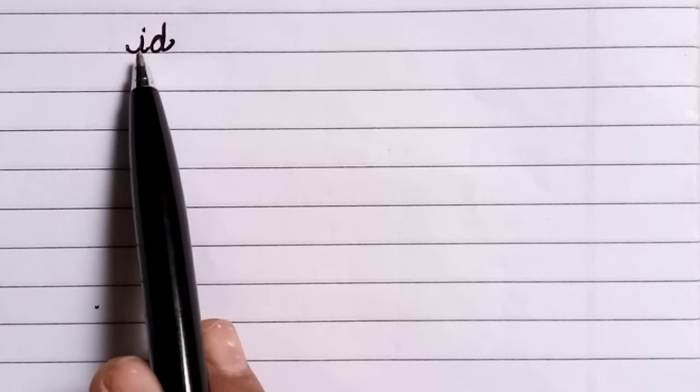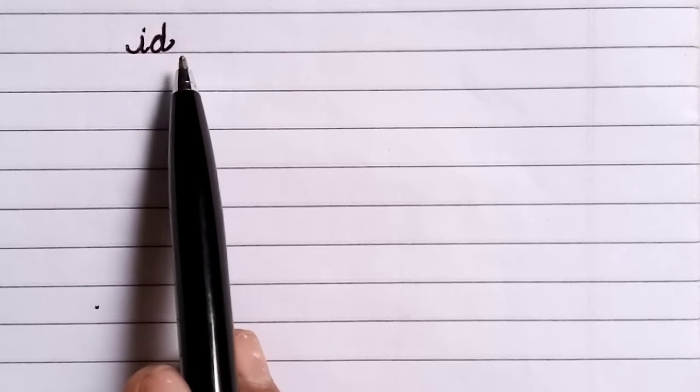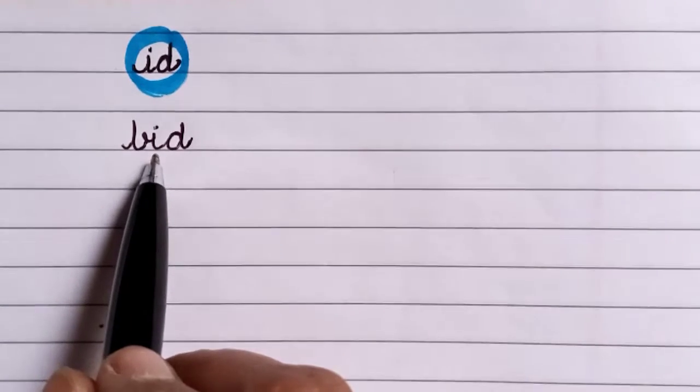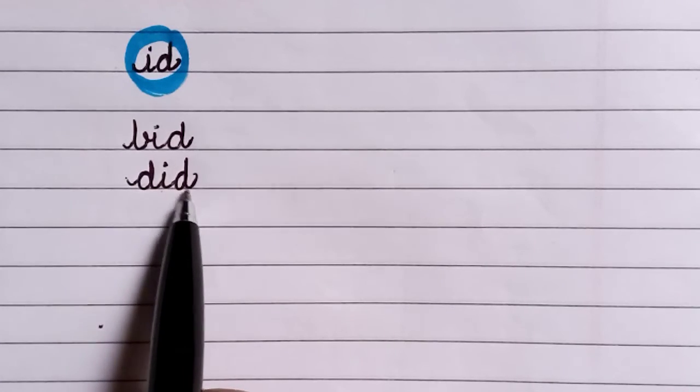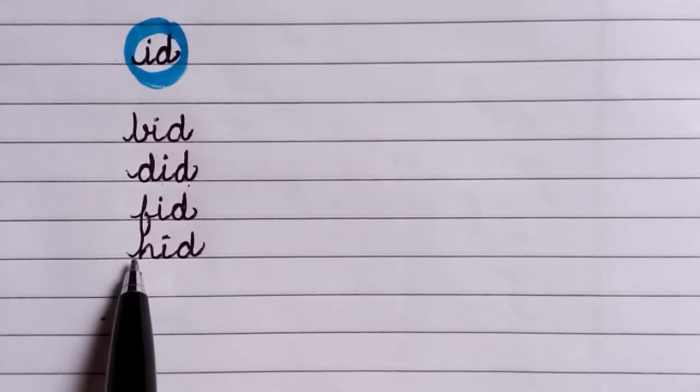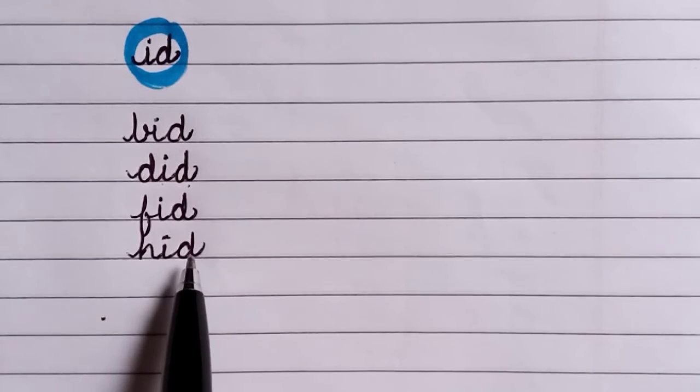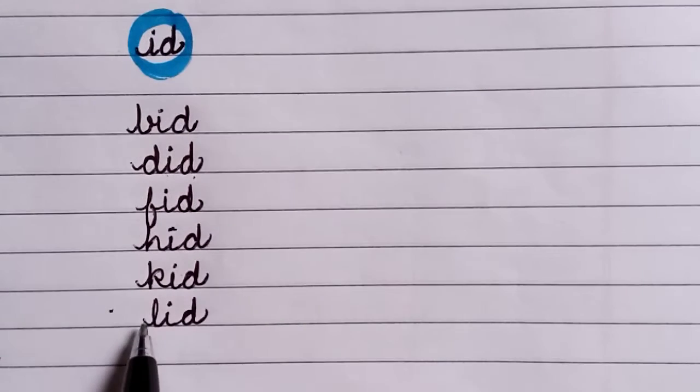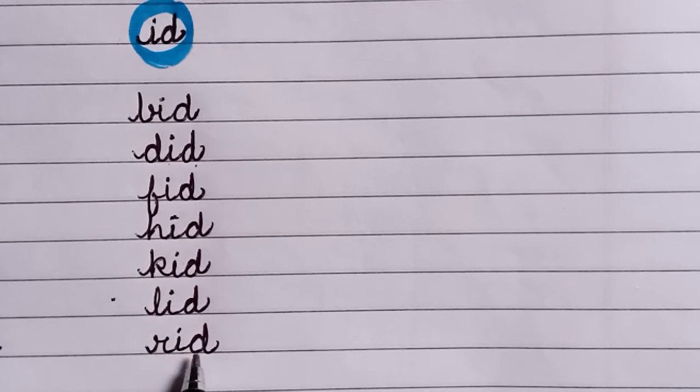Now this will be I, D, Id. B, I, D, Bid. D, I, D, Did. F, I, D, Fid. H, I, D, Hid. K, I, D, Kid. L, I, D, Lid. N, I, D, Rid.